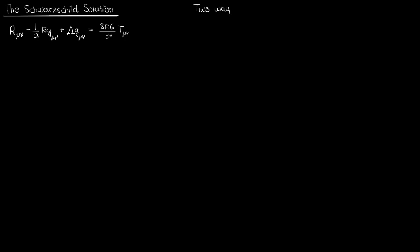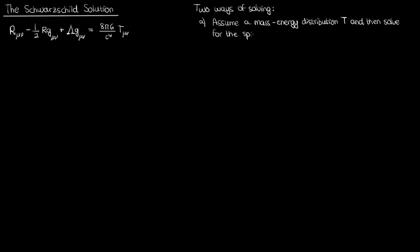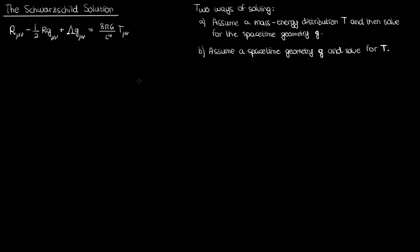We also discussed two ways of solving the Einstein field equations. The first way is to assume a mass-energy distribution, the tensor T, and solve for the corresponding spacetime geometry — your metric tensor. The second way is to assume a spacetime geometry and solve for the corresponding mass-energy distribution. In this video, we're going to use the first way, assume a particular mass-energy distribution, and solve for g, and that's how we're going to get the Schwarzschild solution.